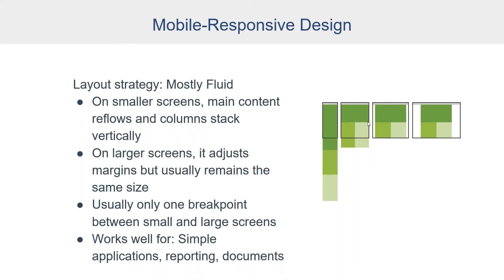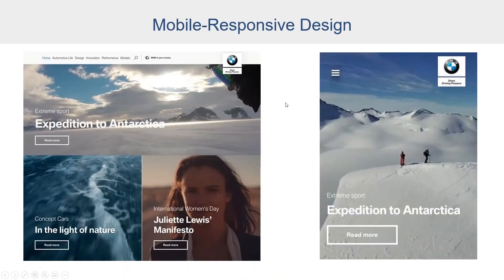Here's an example of Mostly Fluid. There's that one breakpoint — on the small display, you get everything stacked on top of each other, while on medium and larger displays you get that content but with adjusted margins, with spacing on the ends. A good real-world example is BMW's website, where on larger displays they have padding on the outside, and on smaller displays everything is stacked in a column format.